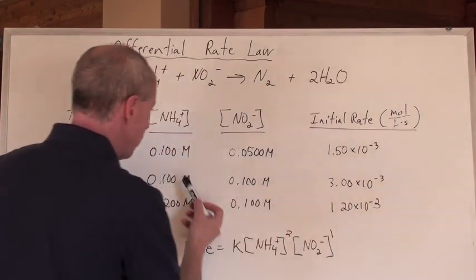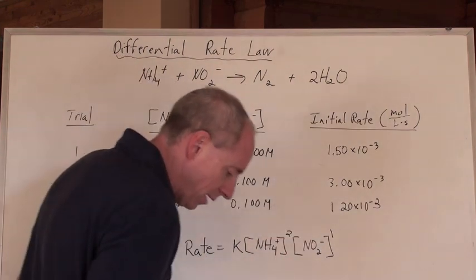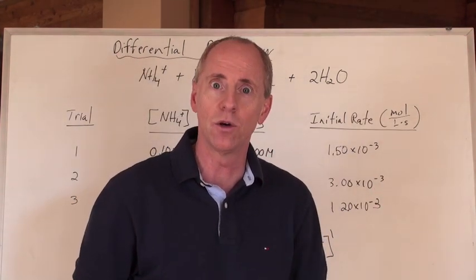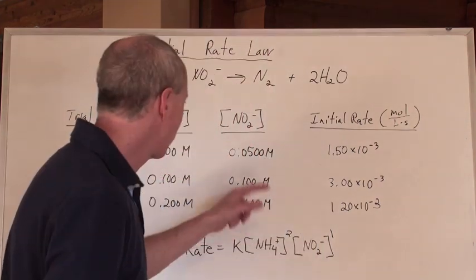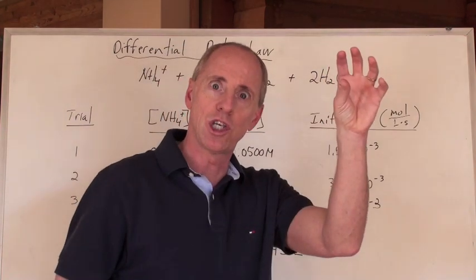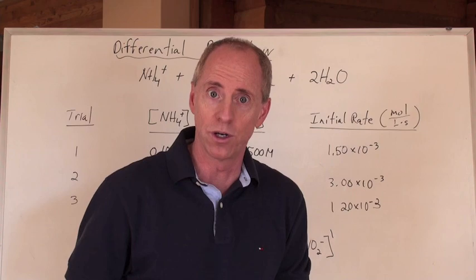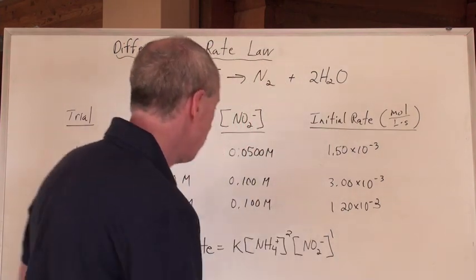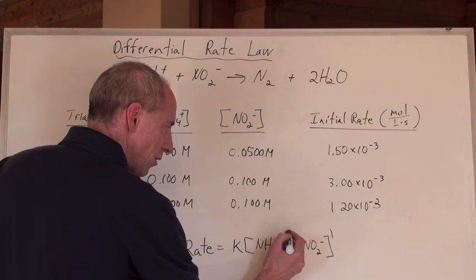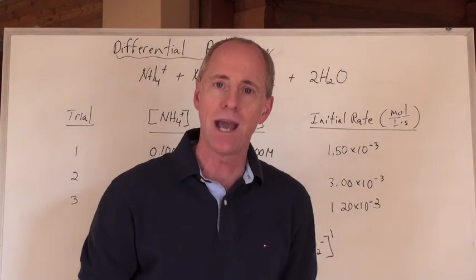So what would have happened if you triple the concentration or something like that and it goes up 9 times? Well, 3 squared is 9, so that would be a second order. Did that make sense? And what if you had doubled the concentration and it went up 8 times? Well, 2 to the cubed is 8. And so, therefore, that reaction would be third order. Now, by the way, this is also, because you add the exponents together, 2 plus 1 here, overall, this is called a third order reaction.